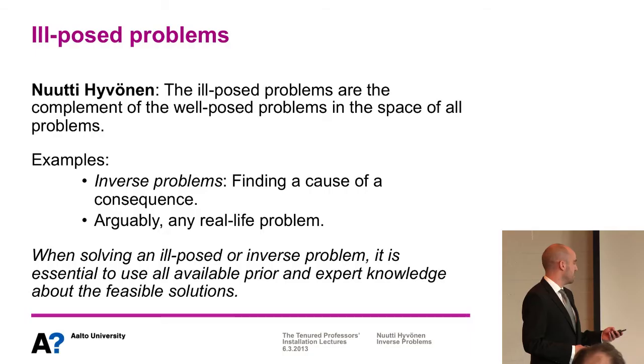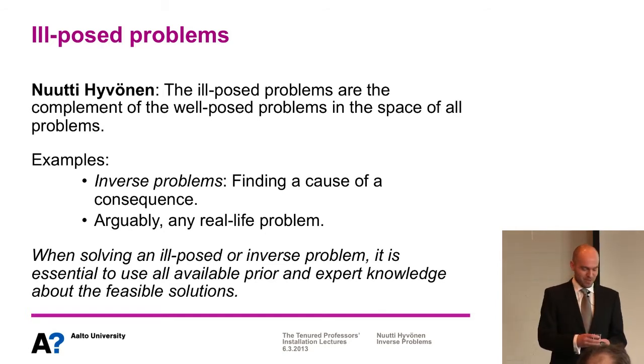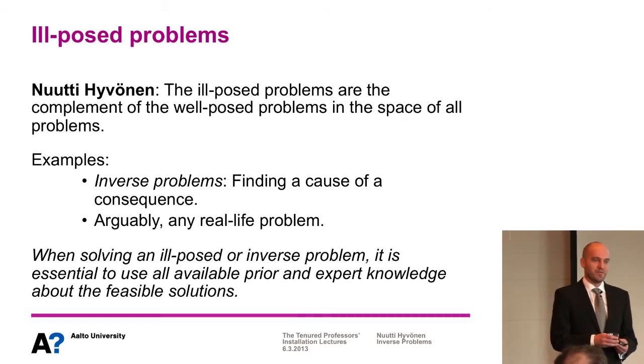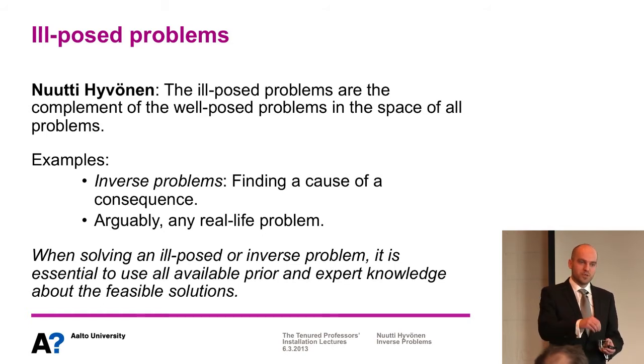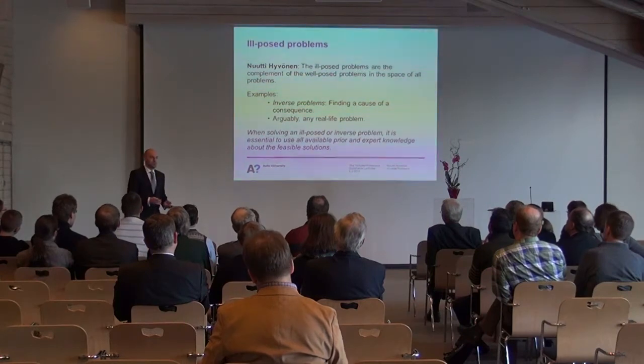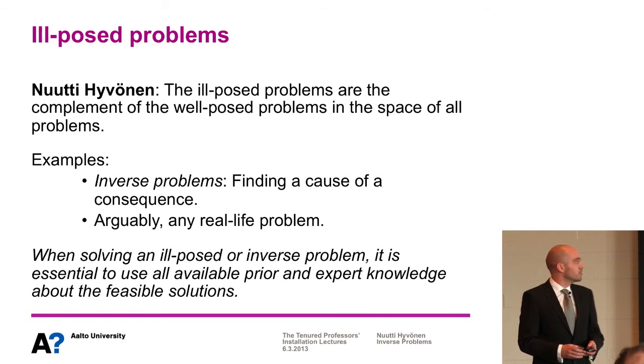When you have these kinds of problems, the thing you should do is to use all prior and expert knowledge about the feasible solutions. For example, you can make the ink-in-water-glass problem more feasible by knowing there was only one drop of ink — that gives extra information, because it would be really difficult to tell whether there were two smaller drops close together or one large drop. You should always incorporate such extra information in the solution algorithm when solving an inverse problem. This is the key message I would ask students to remember after the first lecture: always take into account all prior and expert knowledge about the feasible solutions.